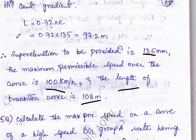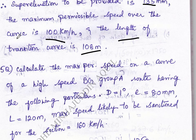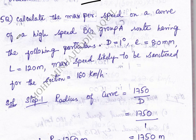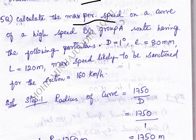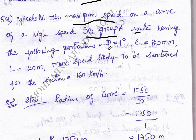Moving to the next type of problem: calculate maximum permissible speed for BG (broad gauge) Group A route. The data given is: degree of curvature D = 1 degree, E = 80 mm, length of transition curve = 120 meters, and maximum speed = 160 km/h.